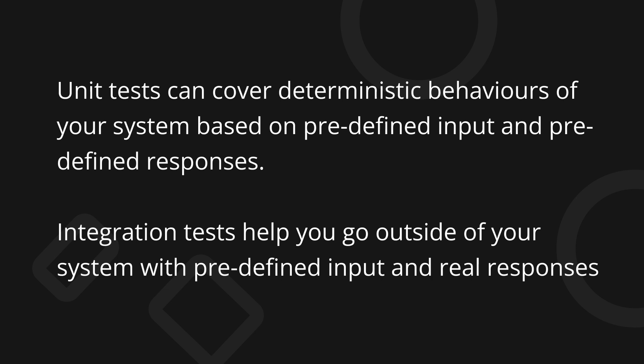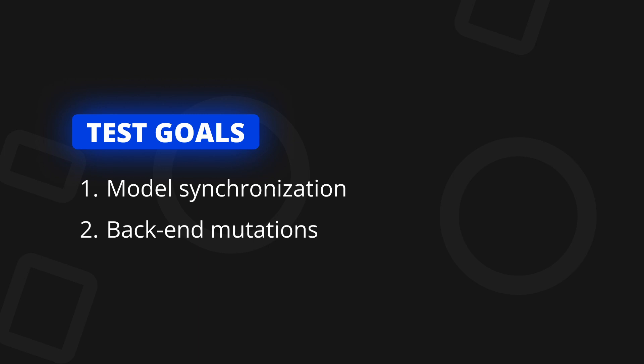Integration tests have proven to be the most valuable when you need to ensure that the backend your code is interacting with is still compatible with the version of code you are running. If the backend changes outside of your control, this is an important set of tests to automate. The goal is to ensure correct model synchronization — it's common for the backend and frontend to have a representation of the same model, which can get out of sync when backend and frontend developers are separate. Writing an integration test that executes a code path where data is fetched and serialized gives you a way to quickly check if everything is still working when a new backend update is pushed.